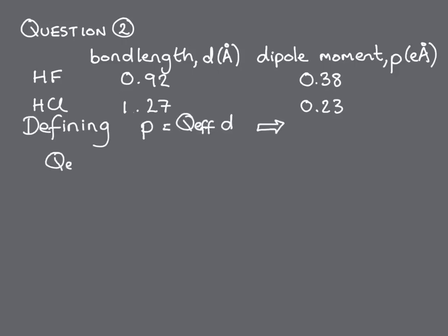Defining p is equal to Q effective times d, we calculate the effective charges on the ions in the hydrogen fluoride molecule to be 0.38 divided by 0.92, which is 0.41 electron charges.